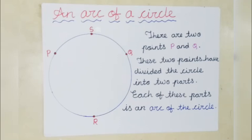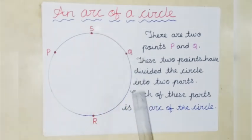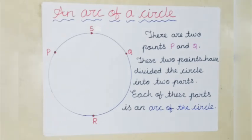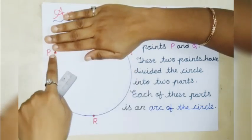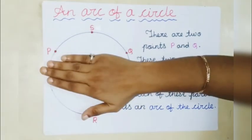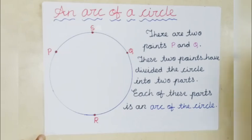Our next term is an arc of a circle. P, S, Q, R are points on the circle — they are situated on the circle. Points P and Q have divided the circle into two parts. Because of P and Q, the circle is divided into two parts: part one is arc PRQ, and the next part is arc PSQ. Each of these parts is an arc of a circle.